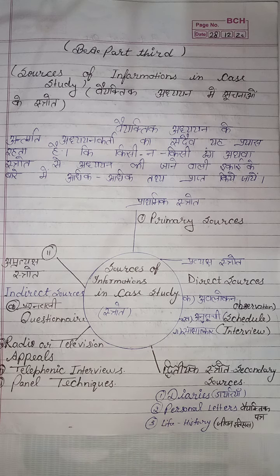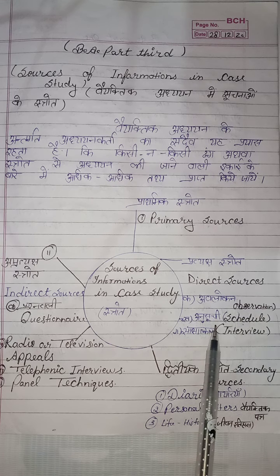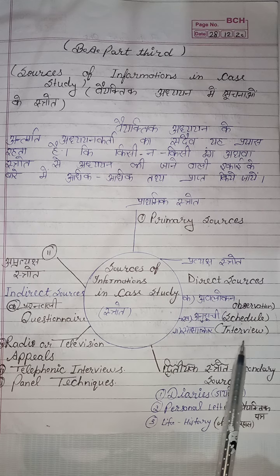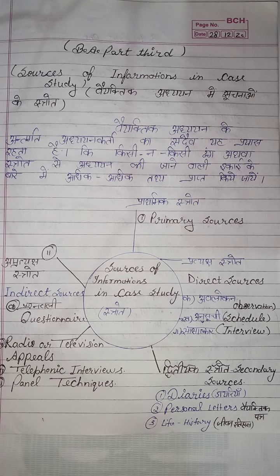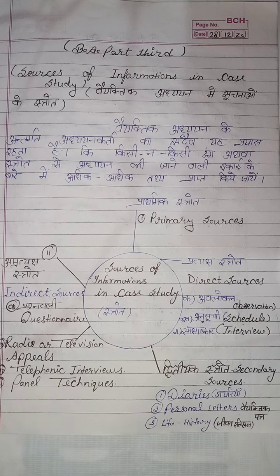Next is Sakshatkar — Interview. Direct sources include: Observation, Schedule (Anusuchi), and Interview (Sakshatkar). Interview is a direct source for collecting primary data. Under this, the researcher meets persons related to the subject of study, has a clear conversation with them on various aspects of the study, and this conversation becomes the source of material collection.